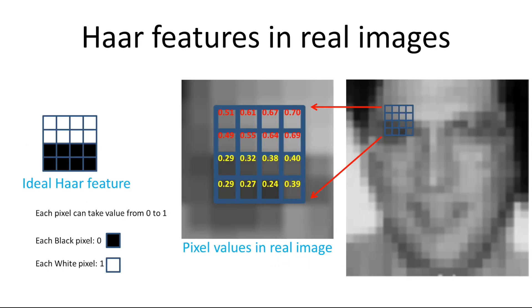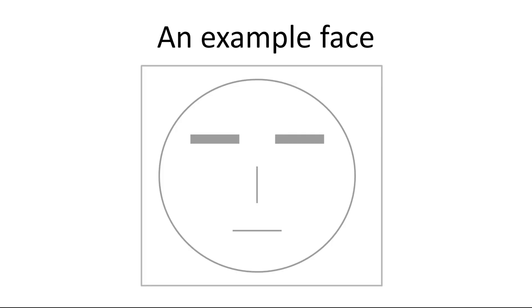OpenCV provides a training method or pre-trained models that can be read using the cascade classifier load method. The pre-trained models are located in the data folder in the OpenCV installation. Let's take a simple face as an example — it has two eyes as horizontal lines, a nose, and a mouth line.